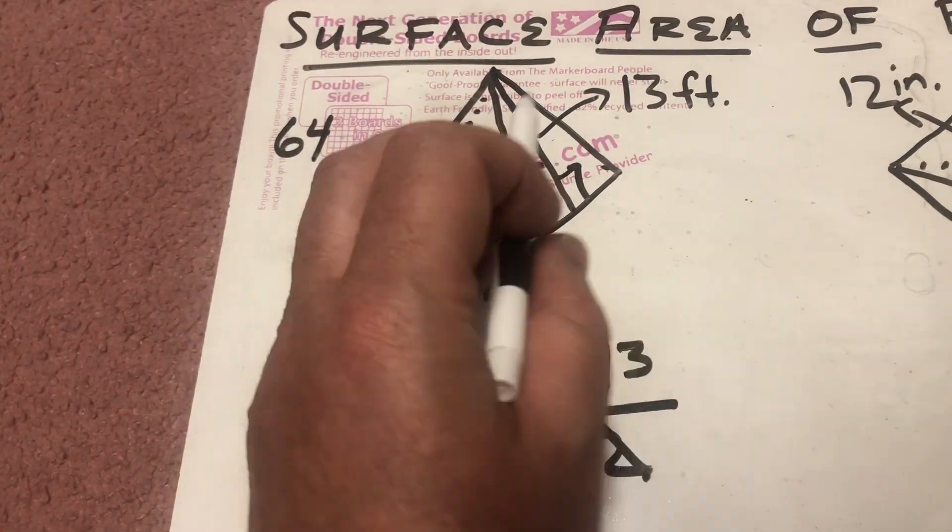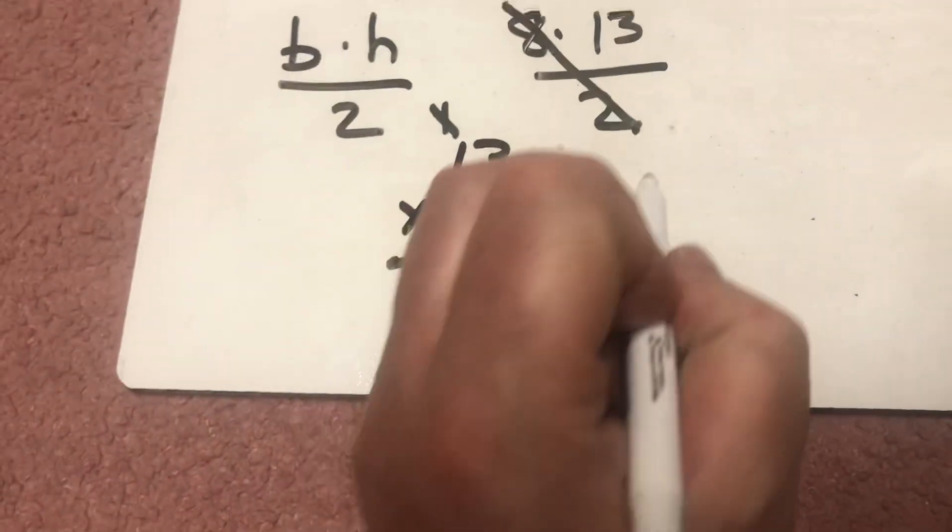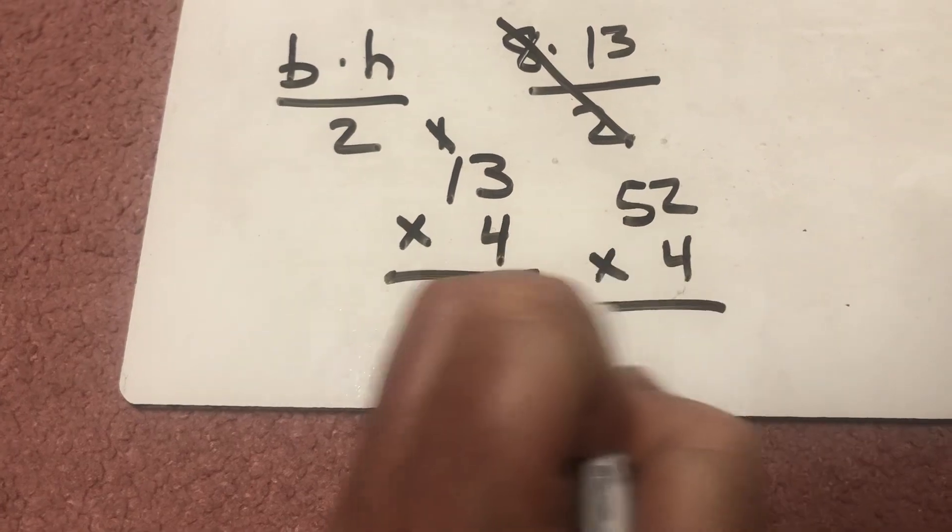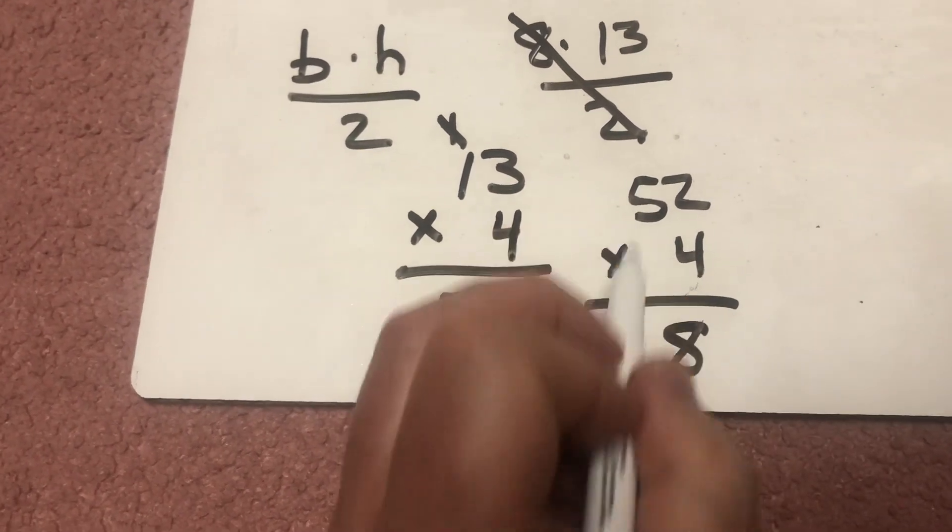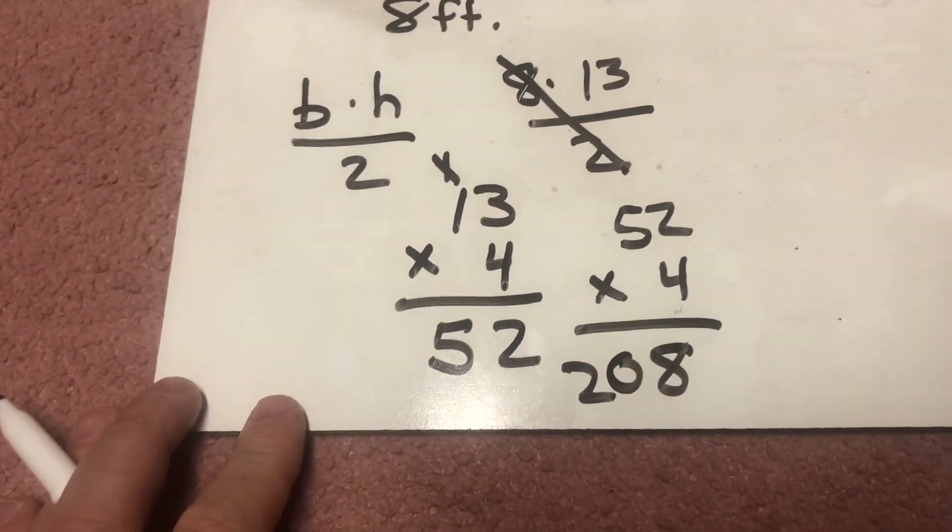But I have 1, 2, 3, 4 triangles. So, I have to take that 52 and multiply it by 4. 4 times 2 is 8. 4 times 5 is 20. I get 208.